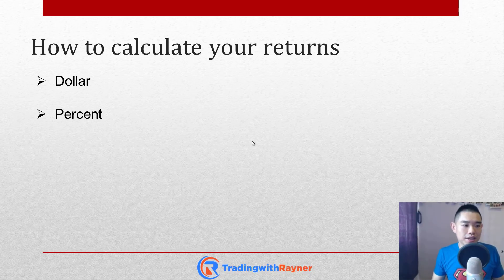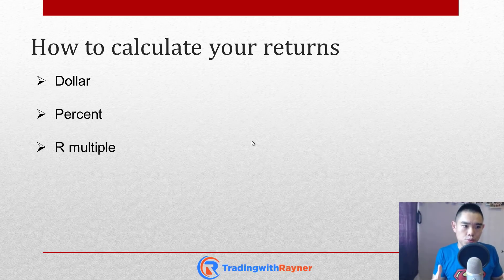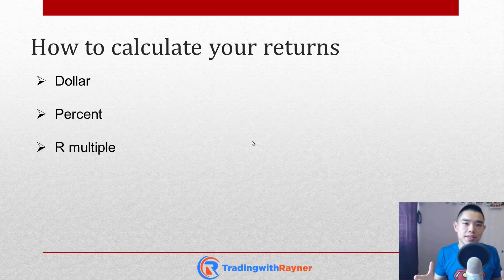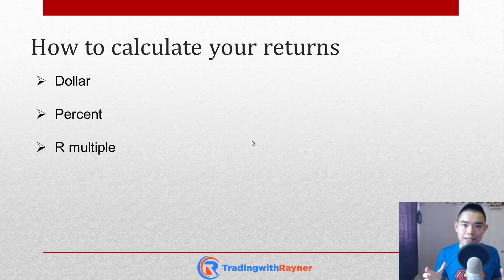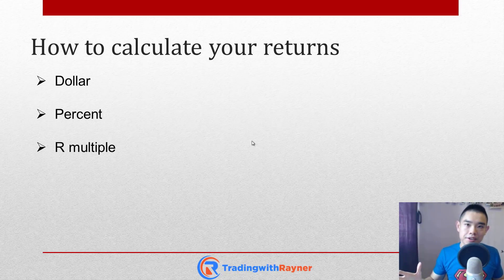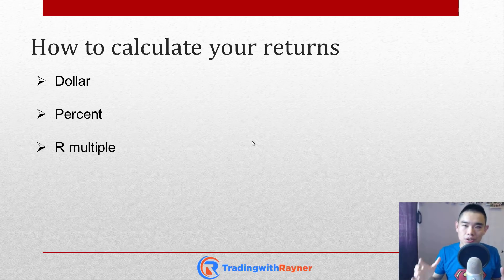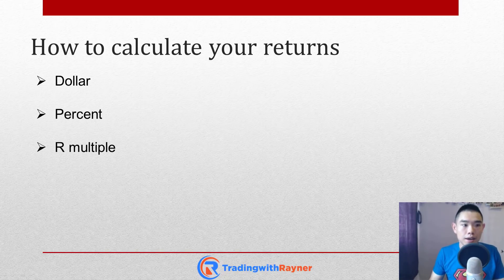The last one is what I call the R multiple, and this is actually my favorite approach to calculate your returns — whether you're trading Forex, options, or whatever. It's a more objective measure. When you look at dollar and percentage returns, they do not take into consideration your risk per trade. When you calculate returns based on dollar or percentage, it does not determine the amount of risk you're taking to achieve those returns.